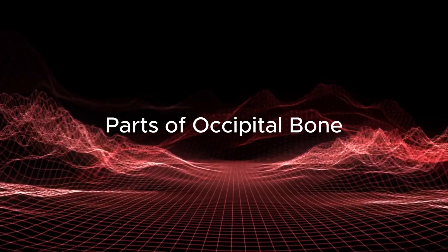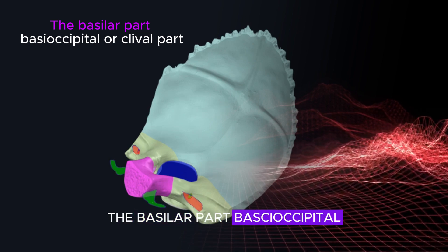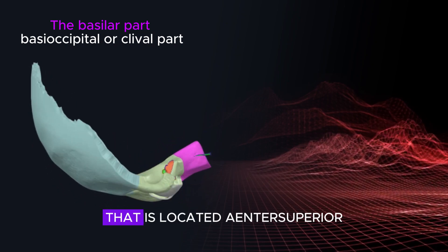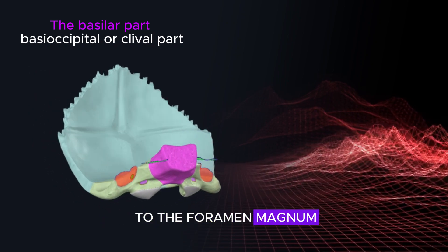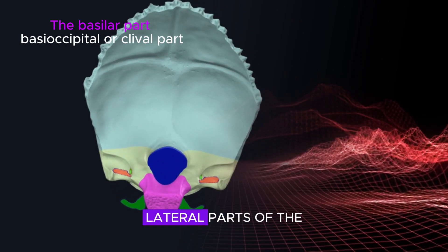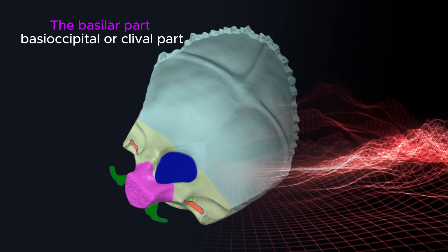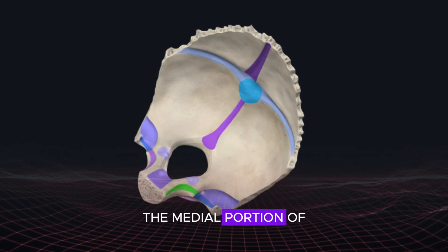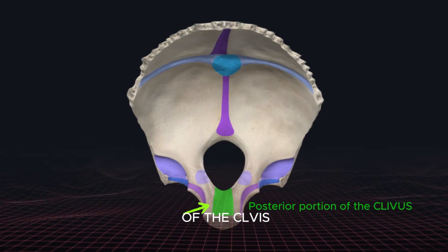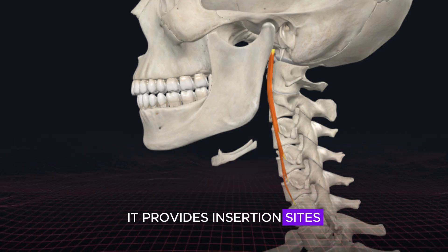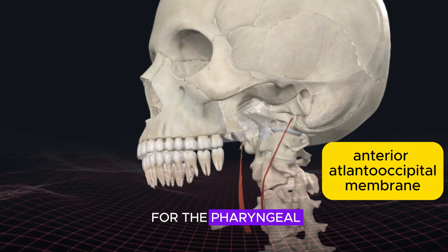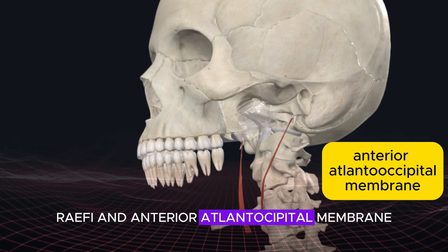The basilar part (base occipital or clival part) is the quadrilateral portion of the occipital bone located antero-superior to the foramen magnum. It is continuous posteriorly with both the right and left lateral parts of the occipital bone. It contains the medial portion of the groove for the inferior petrosal sinus and the posterior portion of the clivus. It provides insertion sites for the longus capitis and rectus capitis anterior muscles, and an attachment site for the pharyngeal raphe and anterior atlantooccipital membrane.